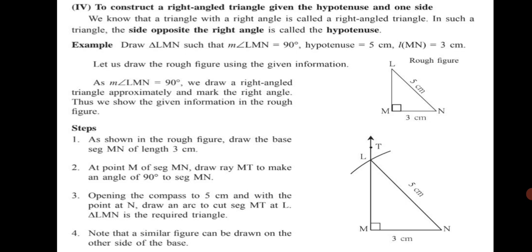Let us draw the rough figure using the given information. As angle LMN is equal to 90 degrees, we draw a right angled triangle approximately in the rough figure and mark the right angle. We show the given information in the rough figure — angle LMN as 90 degrees — and then mark the remaining measures of the sides given. Once the rough figure is ready, we can start with construction of the triangle.